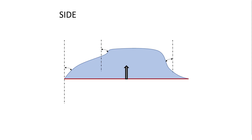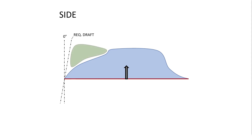The way slope is classified is broken up into three categories. Anything parallel with the direction of pull is considered to have zero degrees of draft. A minimum amount of slope can be specified as the required draft, and any angle that meets or exceeds this is considered positive draft. Any angle sloped toward the direction of pull but not meeting the required amount is considered as requiring draft. Anything sloped away from the direction of pull is considered negative draft.